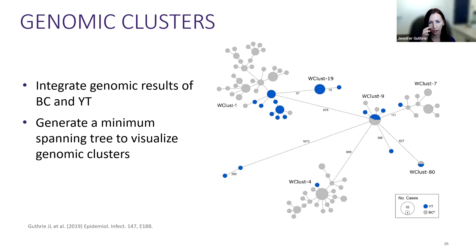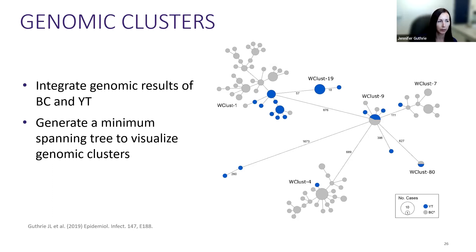We separately put together what we thought had happened transmission-wise. By integrating genomic results from British Columbia and Yukon Territory into a minimum spanning tree, we visualized genomic clusters and where Yukon fell within them. Yukon has year-round road access — unlike some northern fly-in-only regions — so people can move between communities, go to Whitehorse, or travel to British Columbia to visit family, seek healthcare, or work. Some clusters like cluster 19 appear to be all Yukon cases with no BC mix, while cluster 1 shows some mix but the Yukon cases appear genomically distinct.